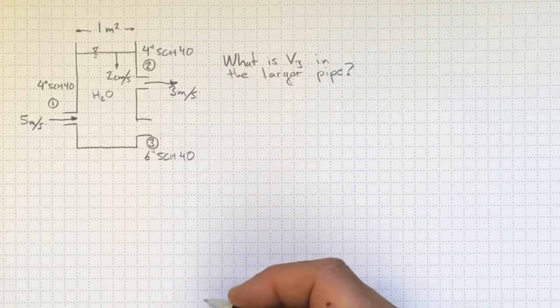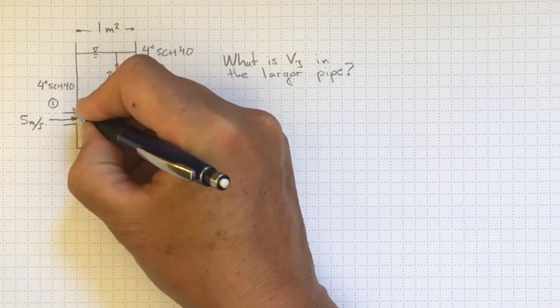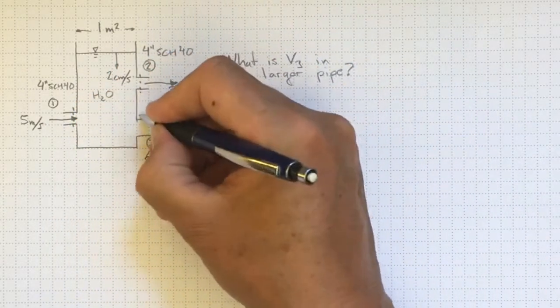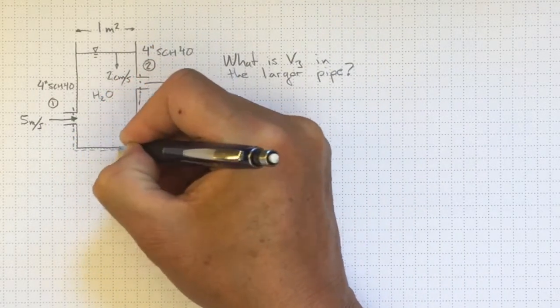So let's figure out how we'll do this. Let's draw a control volume. I want to make sure that my control volume has boundaries that are perpendicular to the flow direction in each of these locations.